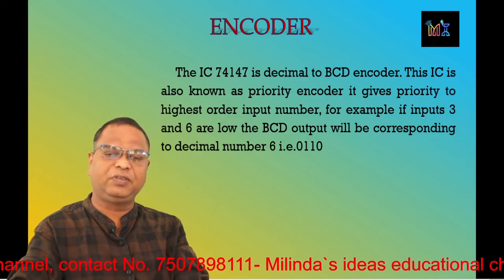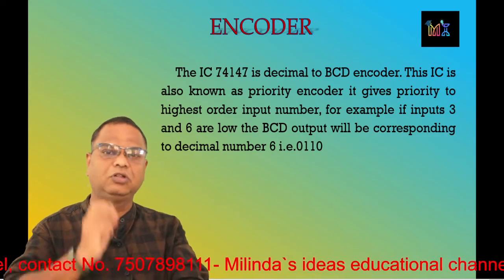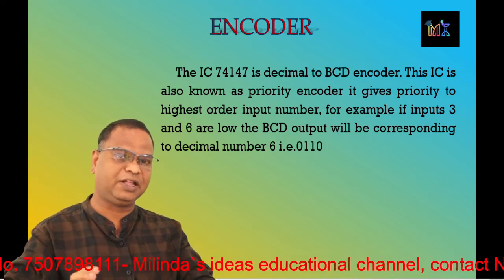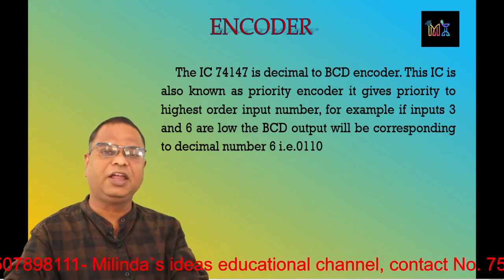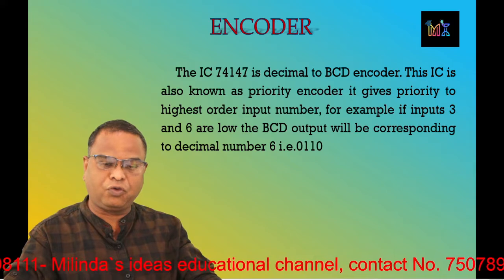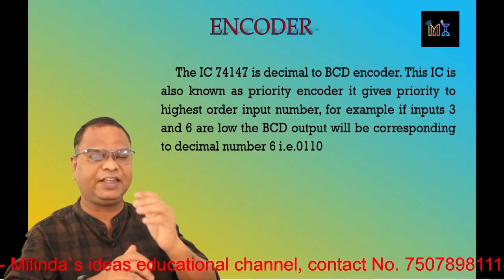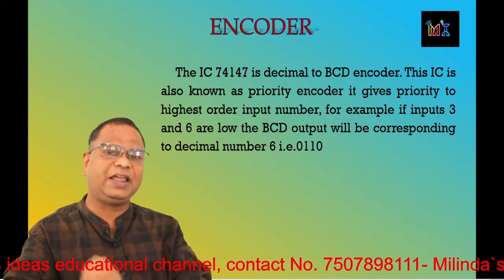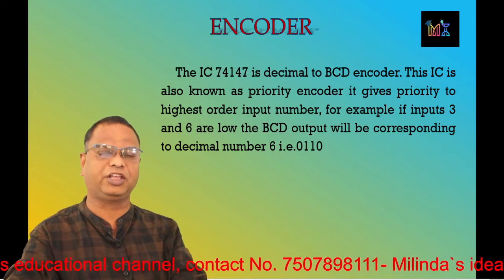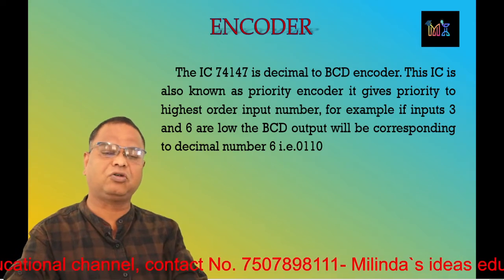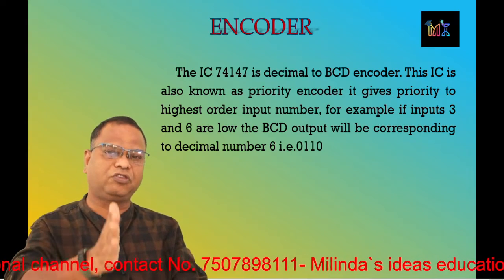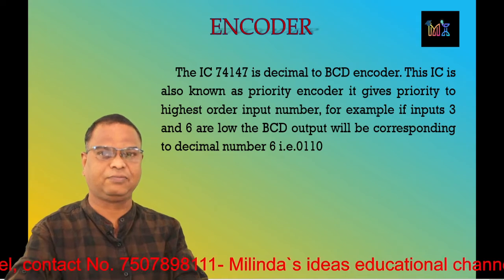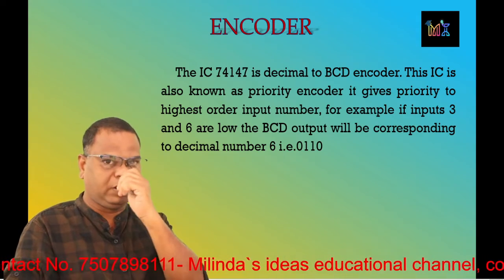In today's video lecture we are going to study the BCD encoder — decimal to BCD encoder — in the form of an IC. IC 74147 is our decimal to BCD encoder. Its output is in BCD form. It is also written as 74LS147. The 'LS' stands for Low Power Schottky — Schottky is the name of the scientist. These components operate at very high speed and consume very low power, hence called Low Power Schottky. So 74LS147, that is the decimal to BCD encoder.